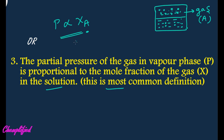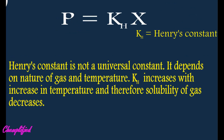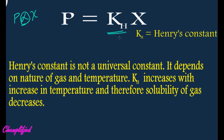This is Henry's Law. The formula is: partial pressure is equal to Henry's constant (KH) multiplied by mole fraction of gas. When you remove the proportionality sign, you add a constant. So the equation becomes: partial pressure of the gas above the solution equals Henry's constant multiplied by the mole fraction of the gas in the solution.